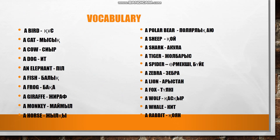Vocabulary for today's lesson. Animals include: cat, cow, dog, fish, frog, shark, spider, bear, zebra, lion, fox, wolf, whale, rabbit.